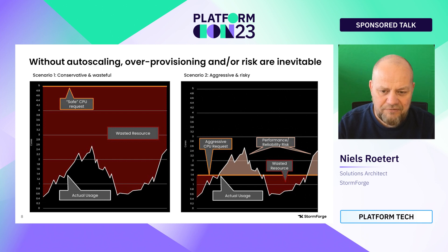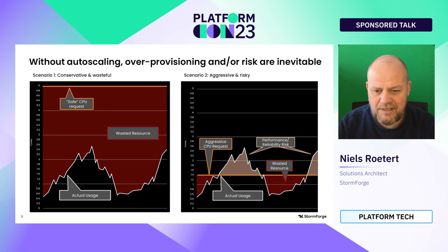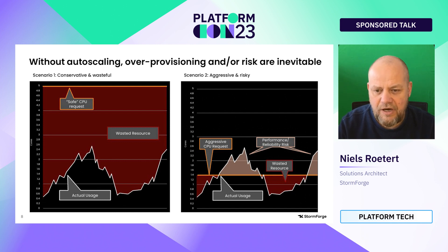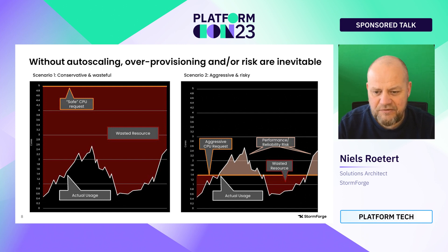In the graph shown here, the actual usage of the application is displayed with a white line. The orange line shows the request for this particular application — about five CPUs — while the actual usage is somewhere between half a CPU and two CPUs. Everything marked in red is basically wasted resources.